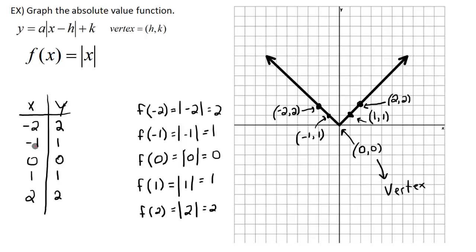To graph this one, I've picked a bunch of x values in the left column, plugged them into my function, did all the math, and got my y values. Then I plotted each one of the five points, connected them all, and we've got our V — our absolute value function. The slope of the right line is up one over one, so positive one. The slope of the left line is down one over one, so negative one. Keep that in mind as we go into our two other problems.